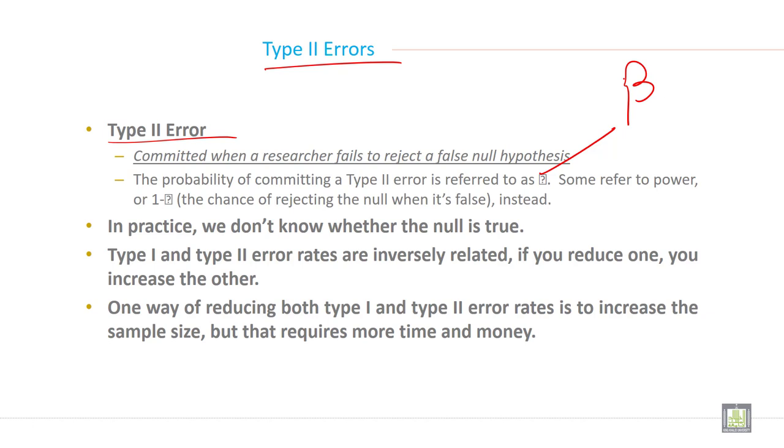Some refer to power, or 1 minus alpha. This is alpha, the chance of rejecting the null when it is false.